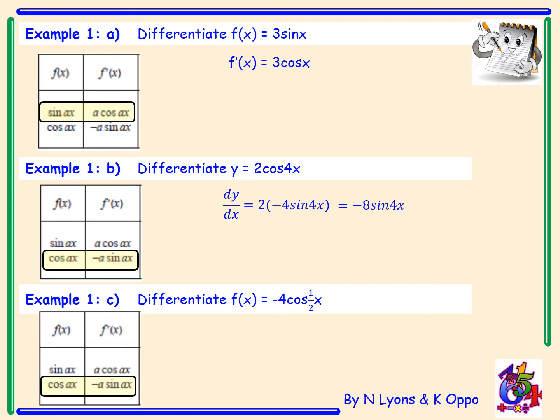Example 1c: differentiate f(x) = -4 cos(½x). Looking at the table, when the function is cos ax the derivative is minus a sin ax. So f'(x): leave the -4 alone and differentiate cos(½x) to get minus ½ sin(½x). Simplifying: -4 times -½ gives 2, so f'(x) = 2 sin(½x).